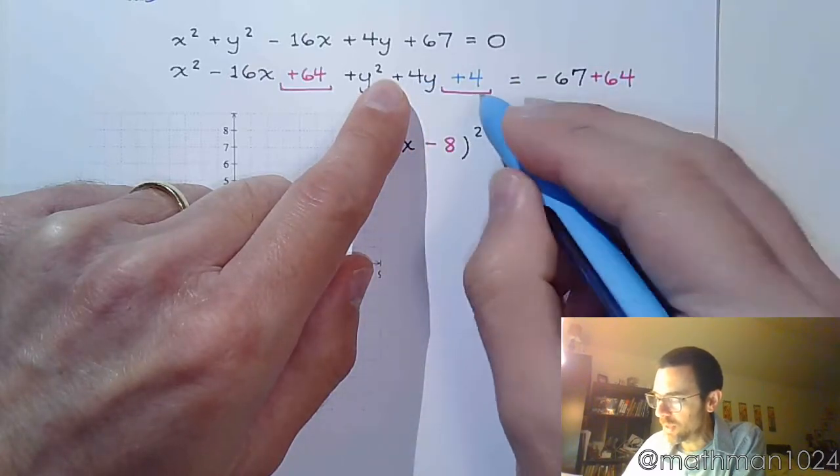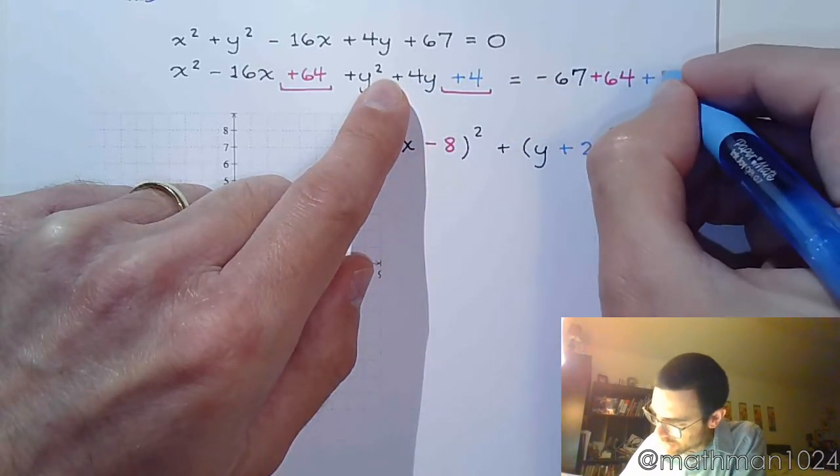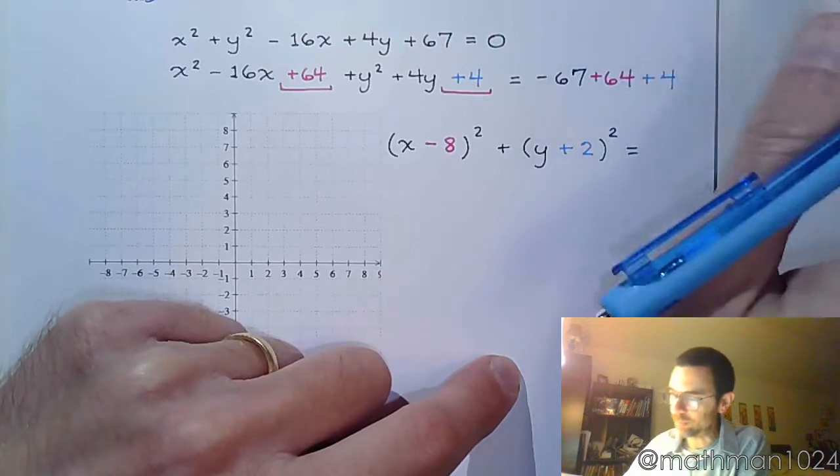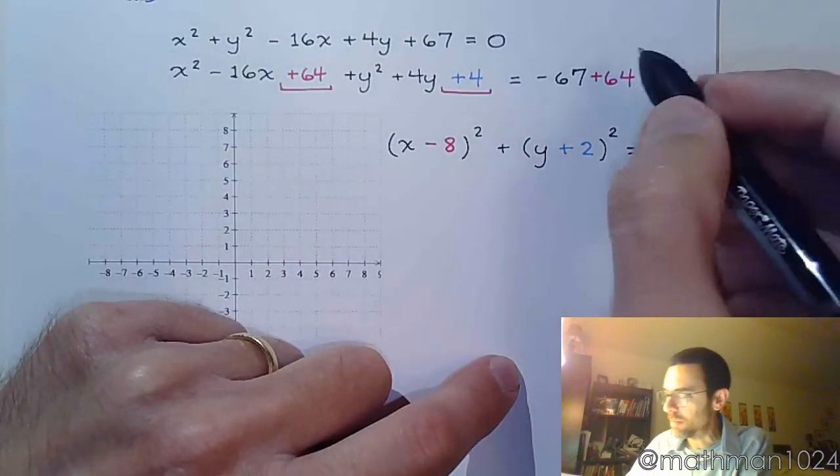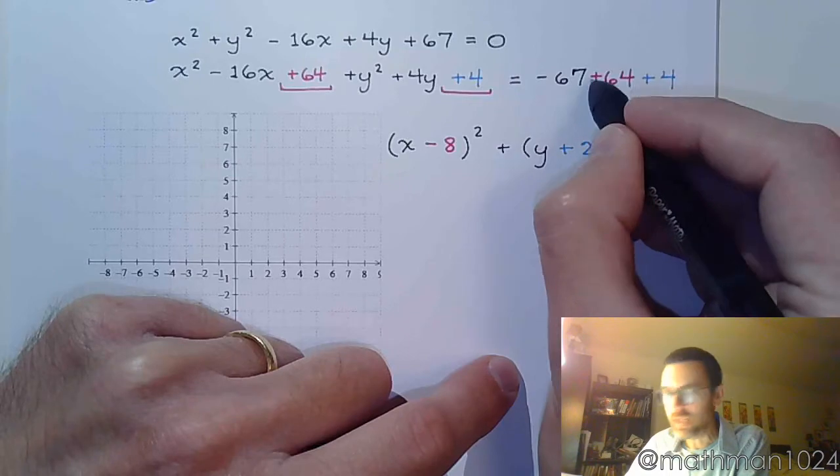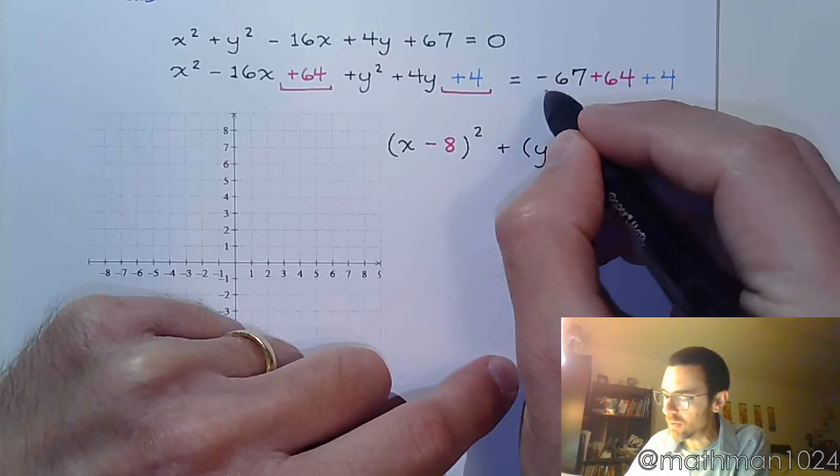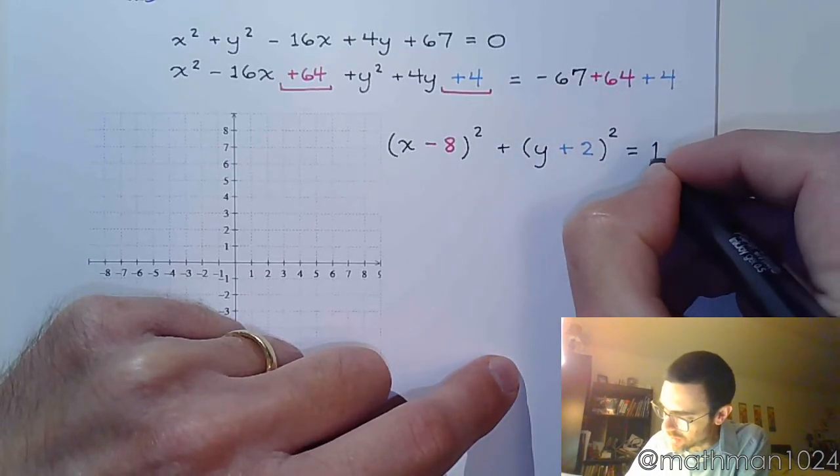Divide by 2 and square it. And then add 4 over here. So when I combine all of this, this gives me 68. So negative 67 plus 68 is 1.